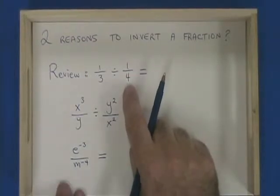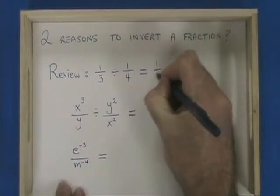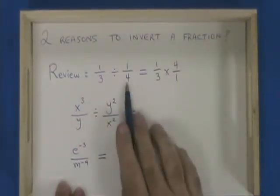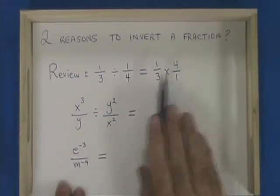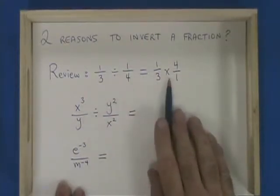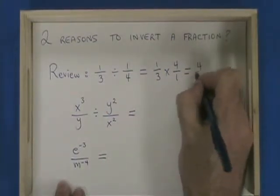As a review, 1 third divided by 1 quarter equals 1 third times 4 over 1. We turn the second fraction upside down, we invert it, and we change the division symbol to a multiplication symbol, and then we're able to give our answer, which is 4 thirds.